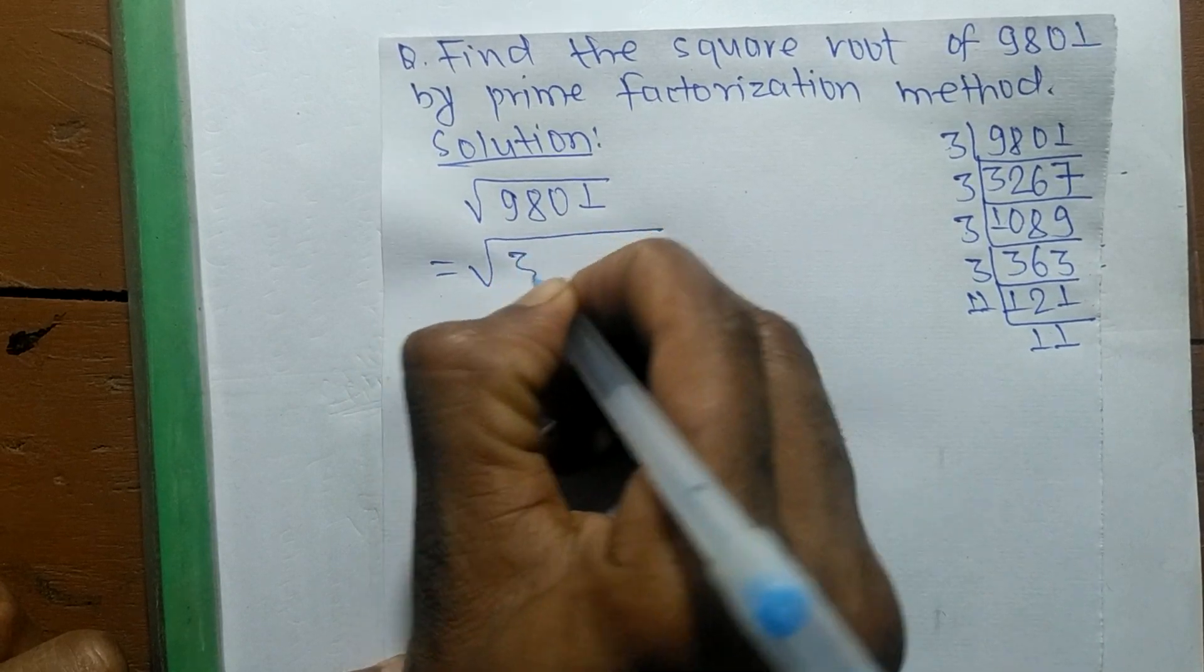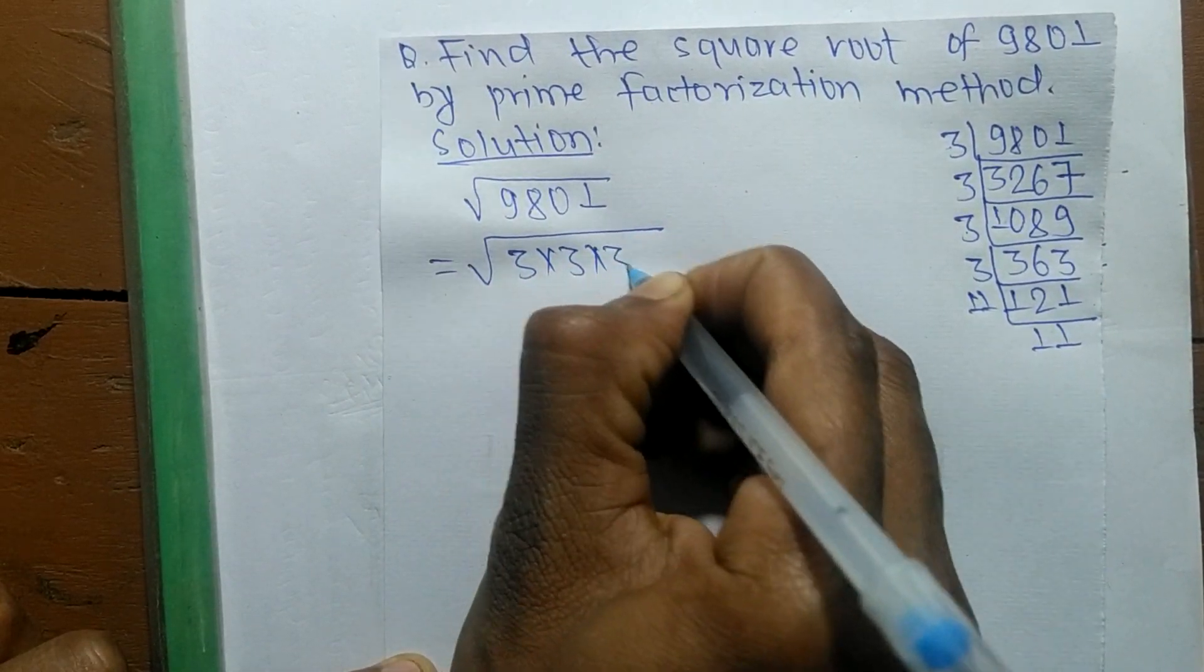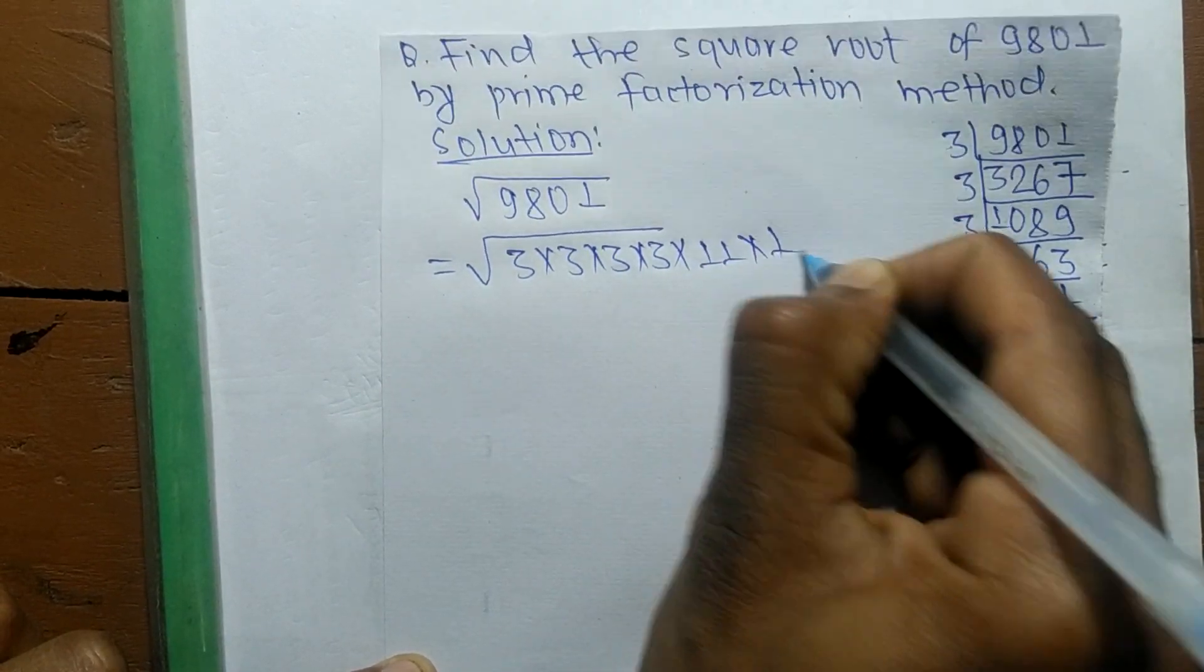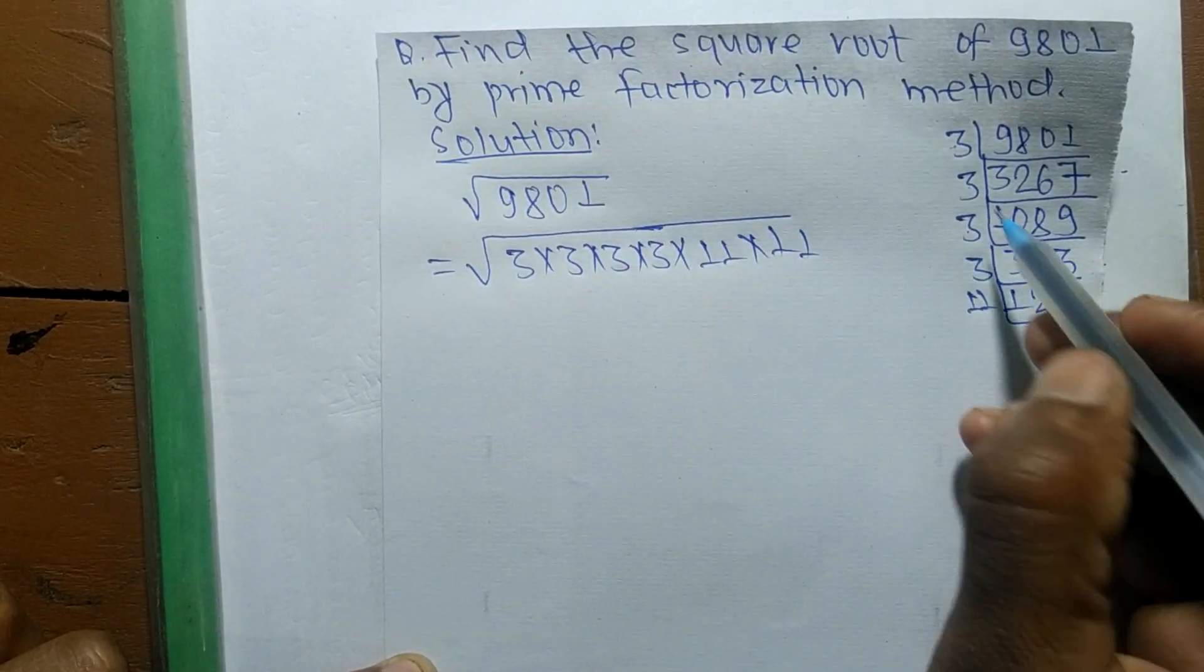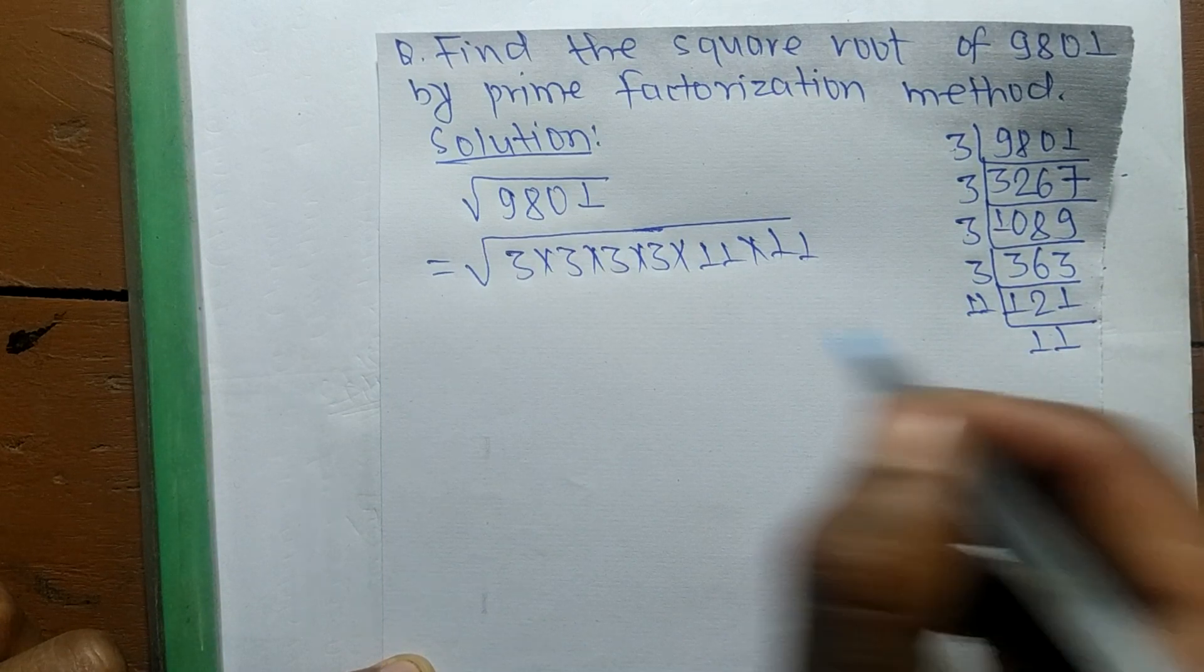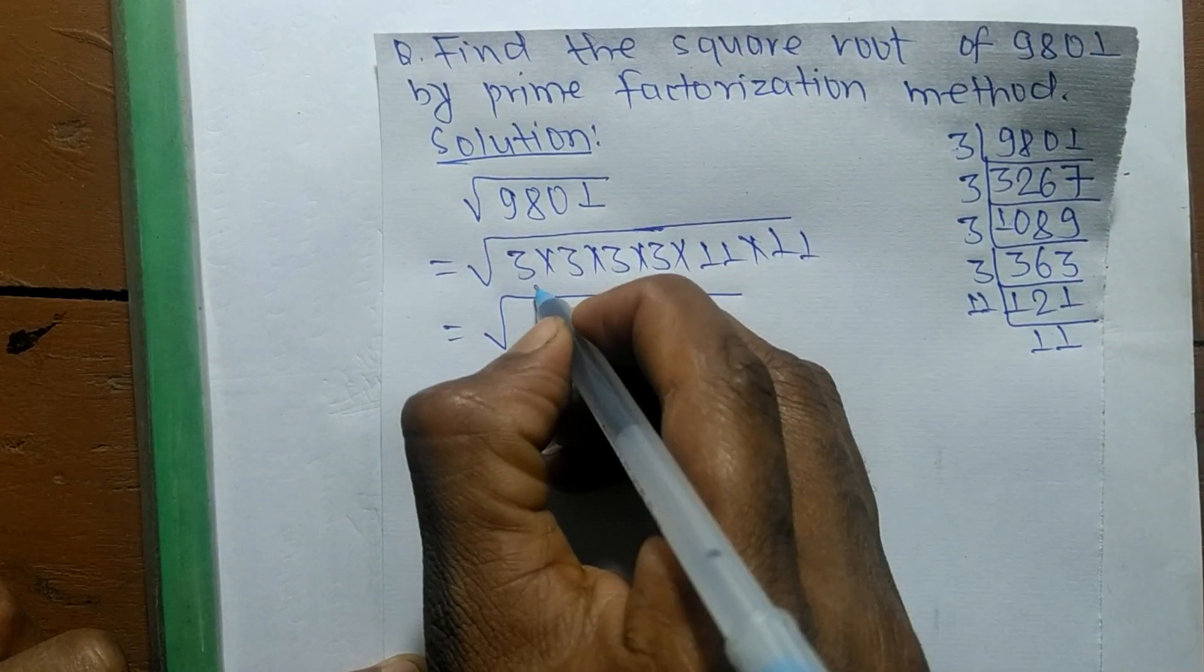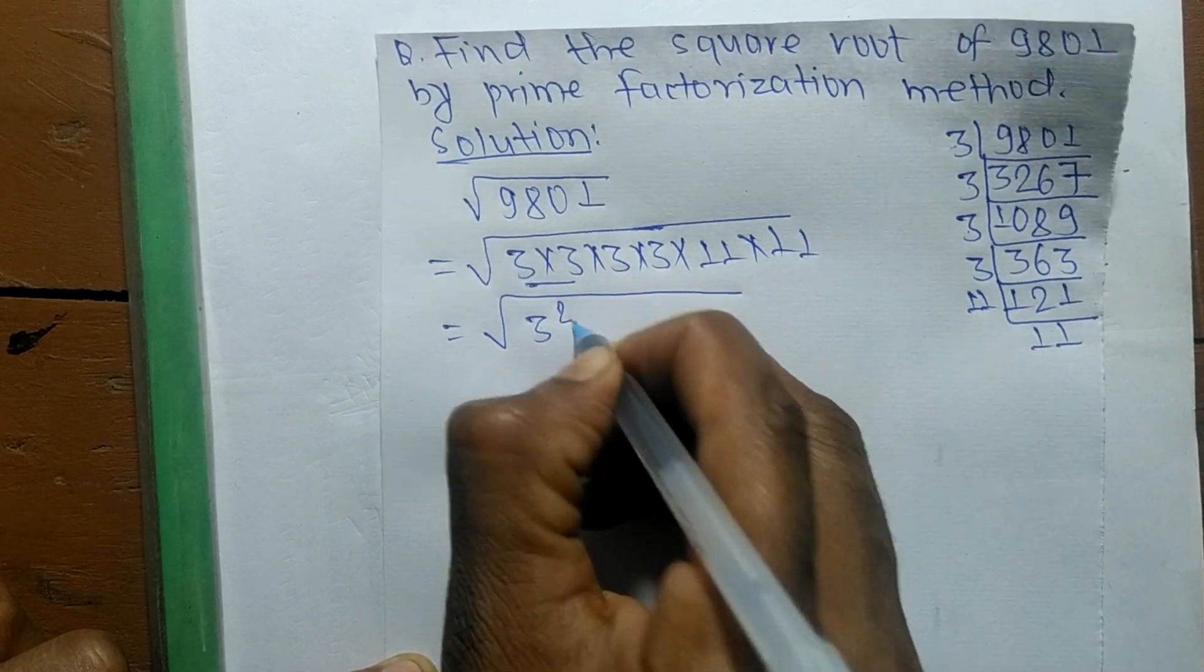we express them as: 3 times 3 equals 3 squared, another 3 times 3 equals 3 squared, and 11 times 11 equals 11 squared. So we make the square root of all these prime factors.